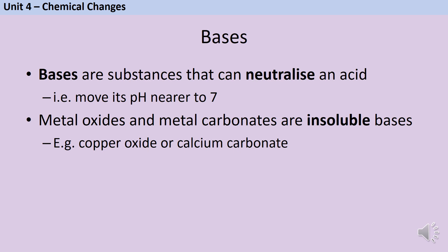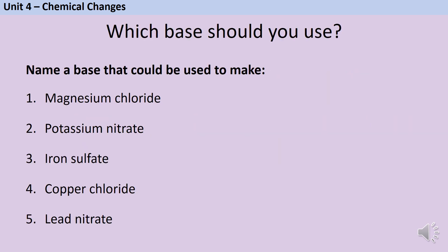So when a question asks you to identify an insoluble base that can react with an acid to make a particular salt, it's going to be either a metal oxide or a metal carbonate. They will either specify that in the question, or they'll just give you free choice and either one would be a right answer. Here are another five examples of salts and you need to identify one base that you could use to make each of these salts. Pause the video and write down some answers.